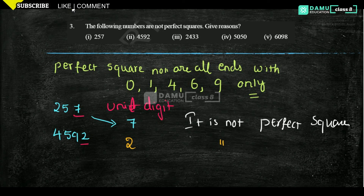Next, 2443. Unit digit is 3. It is not a perfect square because it's not matching with 0, 1, 4, 6, or 9.